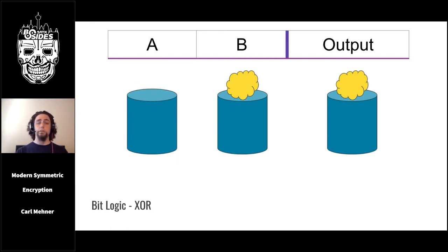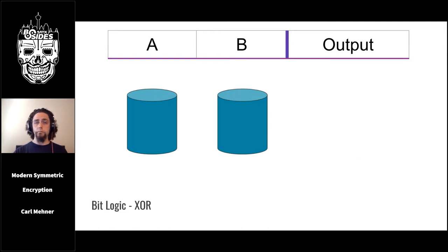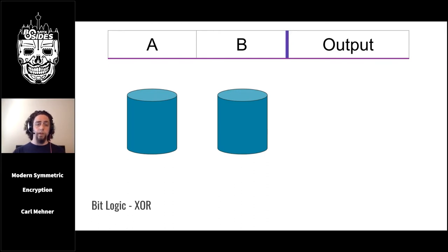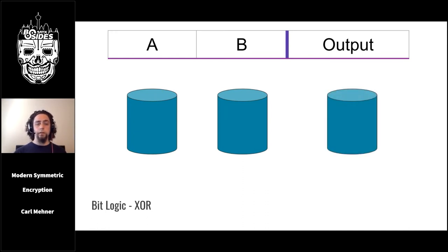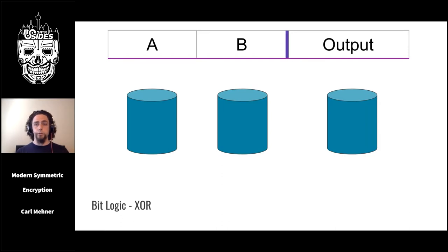This is the math behind what a stream cipher does. Those previous iterations go through all but one of the rows in the truth table. The last one: if both A and B are not set, you don't set the answer cup either. And of course, at this point you can still slide all the cups around without changing the truth of the equation.